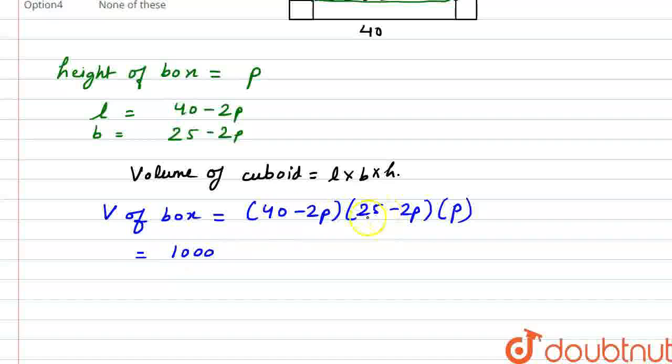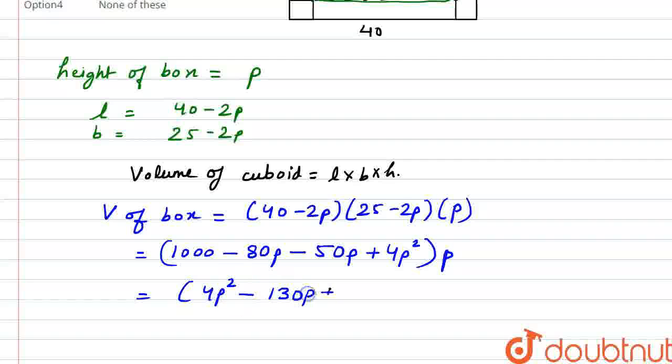Now, 40 into 2P. So, minus 80P. Similarly, minus 2P into 25. So, minus 50P. And this is 2P into 2P is plus 4P square. And this will be multiplied by whole P. Now, let's open it. So, first, let's simplify it. This will be 4P square minus 130P plus 1000. And multiply it by P.